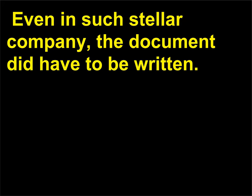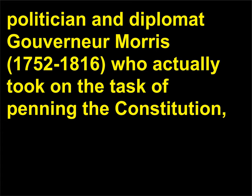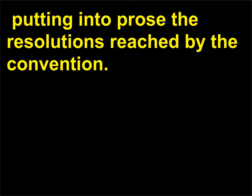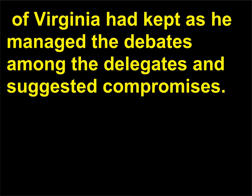Even in such stellar company, the document did have to be written. While many had a hand in this process, it was New York lawyer and future American politician and diplomat Gouverneur Morris, 1752–1816, who actually took on the task of penning the Constitution, putting into prose the resolutions reached by the convention. Morris had the considerable help of the records that James Madison, 1751–1836, of Virginia had kept as he managed the debates among the delegates and suggested compromises.